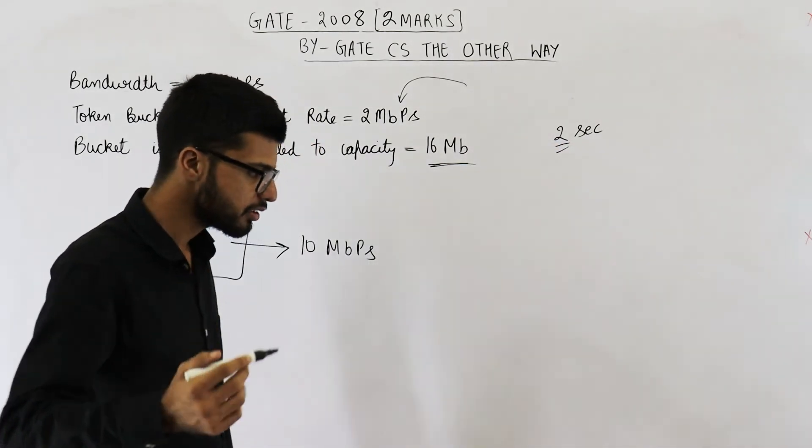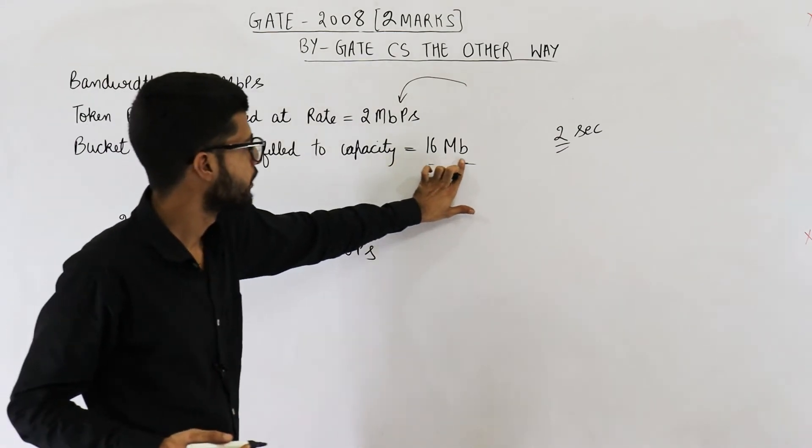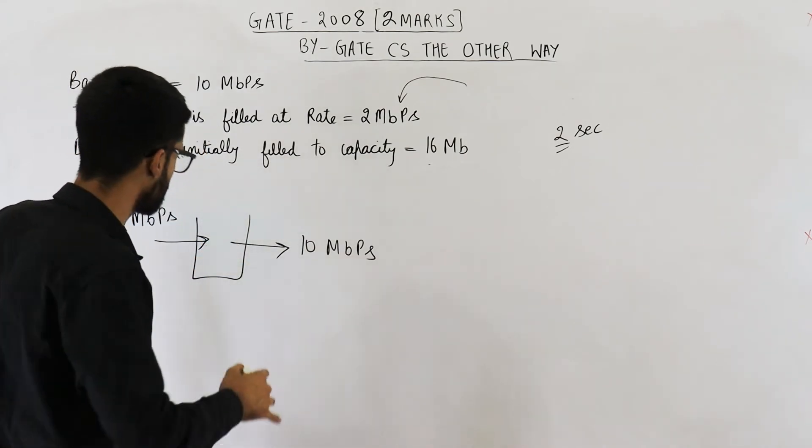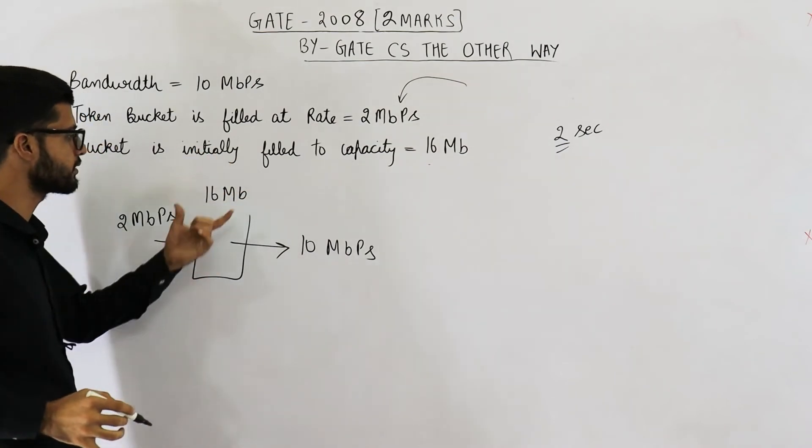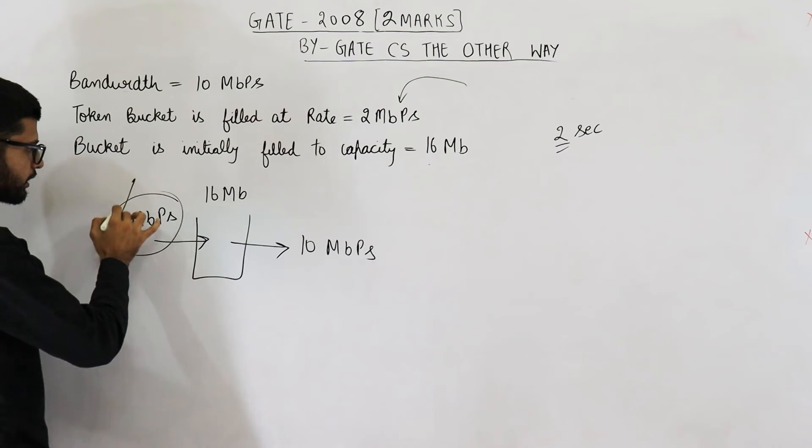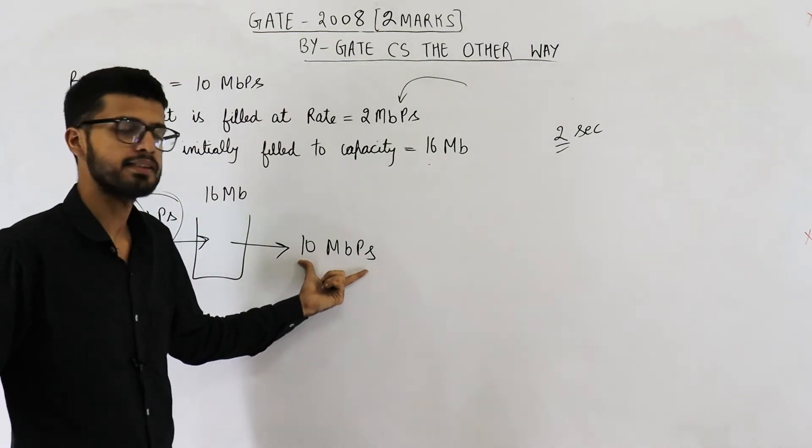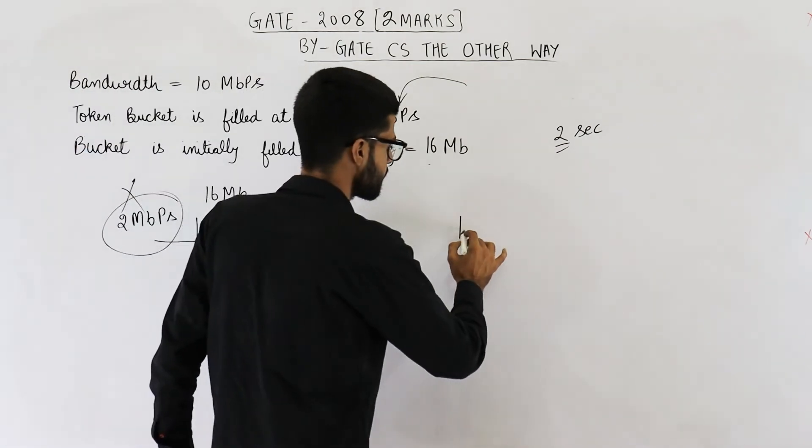One more thing. Students generally make one mistake. They say that inside this bucket, we have 16 MB of tokens. This much tokens are present in the bucket and they ignore this thing. They completely ignore this point. They simply think that we are taking away tokens at 10 Mbps, so 16 MB would last for 1.6 seconds.